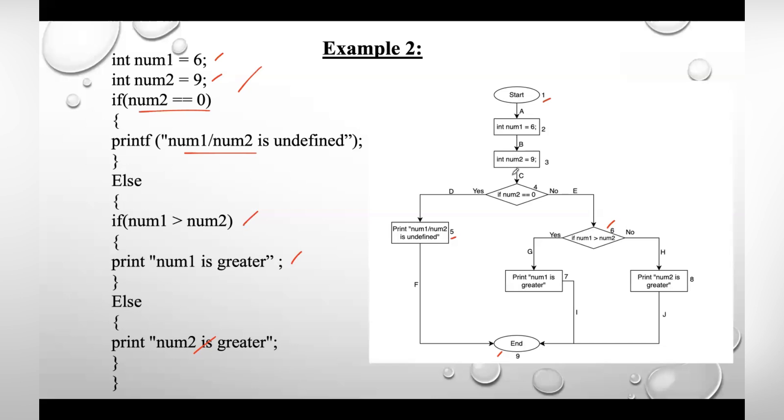So here these three statements will execute as is. Two statements, and after that we'll check the condition. If that condition is true, move to this, else move to this block 5 and print the value. After that you need to reach end. If this condition is false, move to this right part and check the second condition.